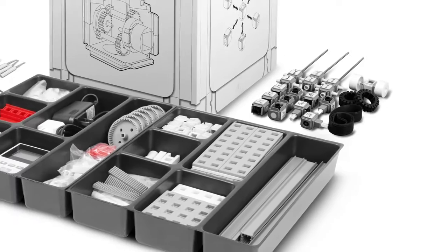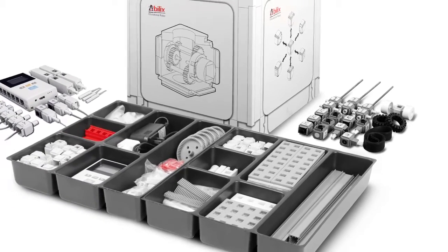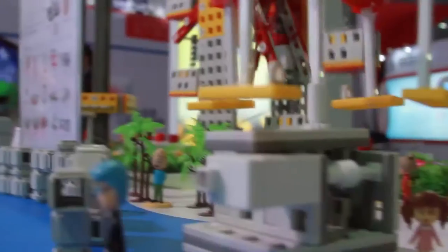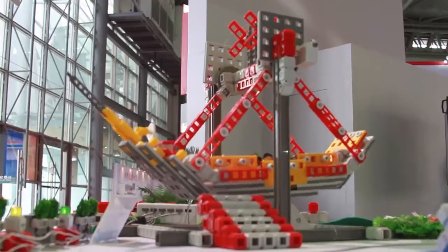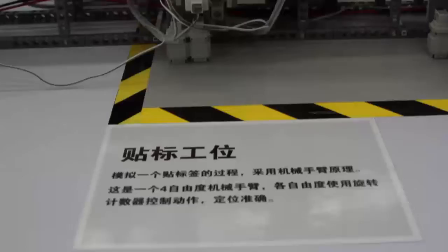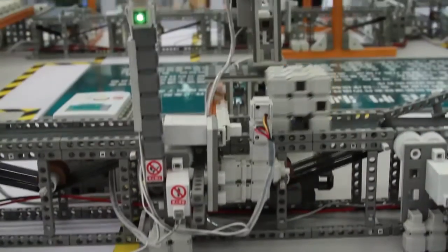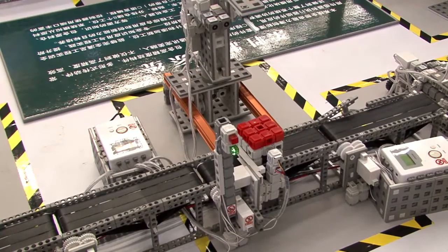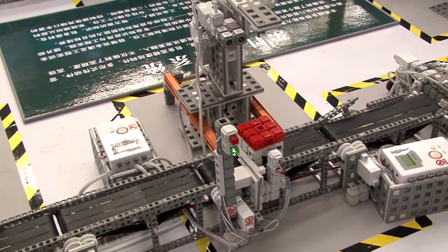Besides the standard construction piece, which is called a cube, the C Series also contains more than 100 different types of structural parts, connectors, transmitters, sensors, and actuators. Therefore, C Series products can be easily built into many varieties of different shapes and functioning robots.